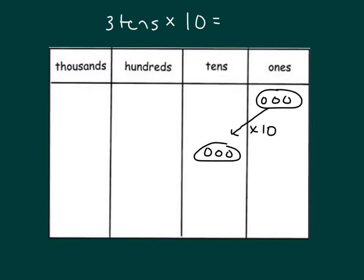If I was to multiply by 10 again, I would be taking 3 tens times 10. So we have 3 tens here as a group. We multiply by 10, and then what would we get? We would have 3 hundreds. So 3 tens times 10 does equal 3 hundreds.